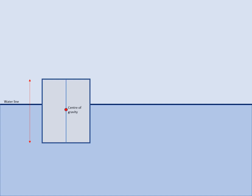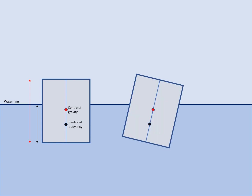If we consider a floating body we can say that it has a centre of gravity and a centre of buoyancy, and if this same body is tilted off its axis we can say that the centre of buoyancy is going to shift a bit.